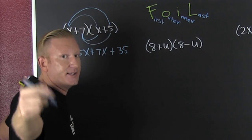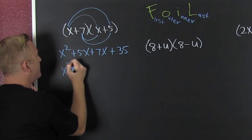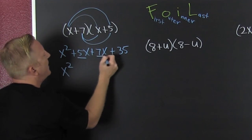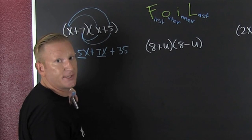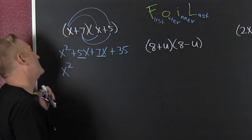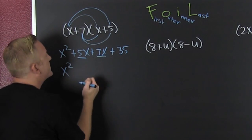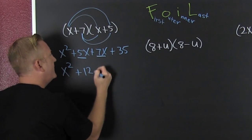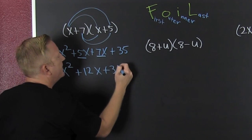And then we gather, collect, and combine. We find we have like terms. Like terms are terms with exactly the same variables raised to exactly the same powers. So then 5 and 7 is 12x, plus 35.